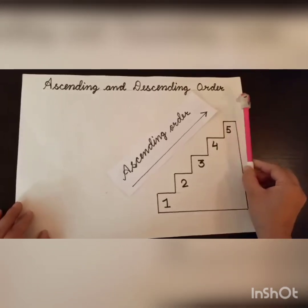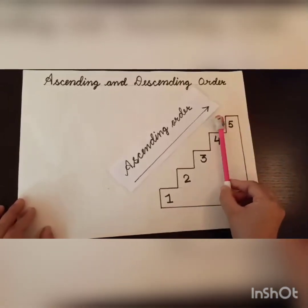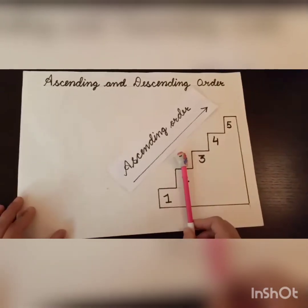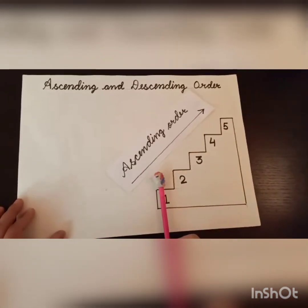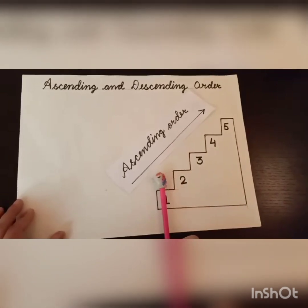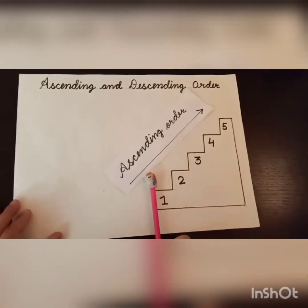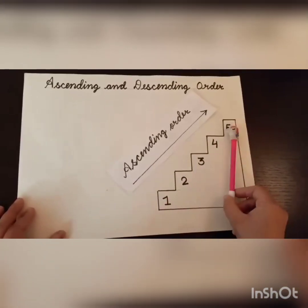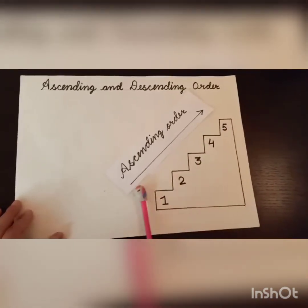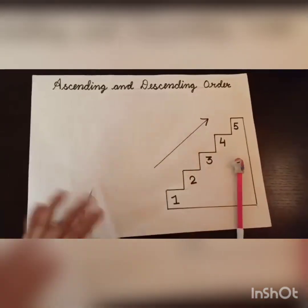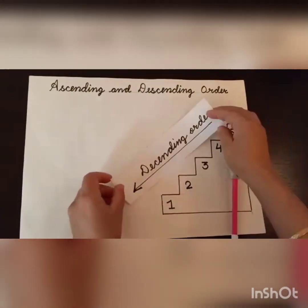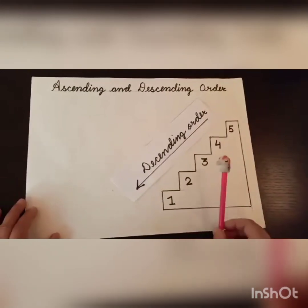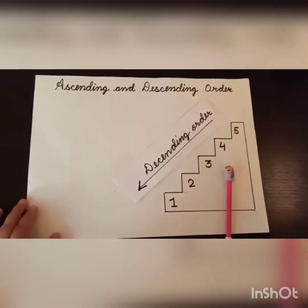Now Tutu wants to come back. What will he do? He will come to stair number 4, then 3, then 2, and in the end stair number 1. What is he doing here? He is coming from big number to small number — big to small. This is called descending order. Moving from big to small is called descending order.